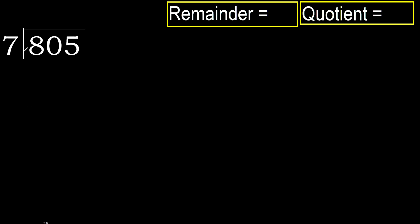805 divided by 7. 8 is not less, therefore work with 8. 7 multiplied by which number is nearest to 8 but not greater? 7 multiplied by 2 is 14, which is greater. 7 multiplied by 1 is 7, which is not greater. So 8 minus 7 is 1.